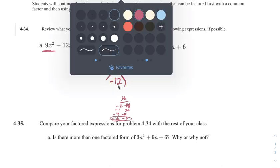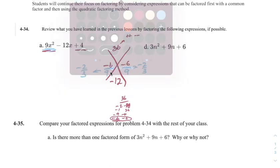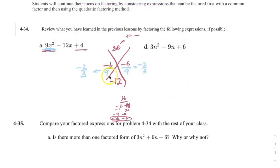Remember the trick is now we just divide by A. So whatever A is, then we reduce. I can divide both by 3 and I get negative 2 thirds and negative 2 thirds. And remember the general rule here is the bottom number goes in front — the bottom ones go with the X. So that's going to be 3x minus 2 and 3x minus 2.